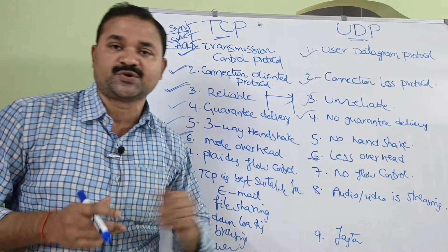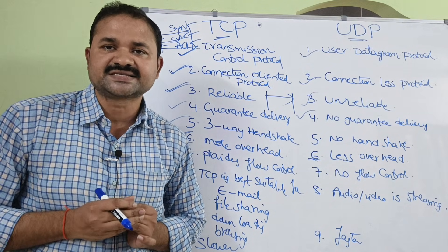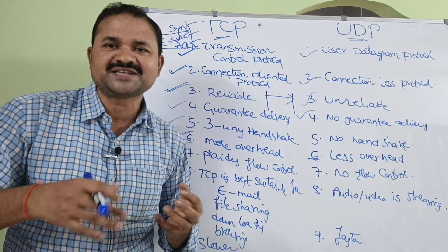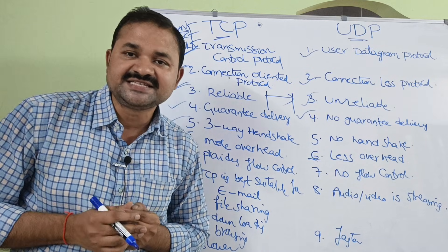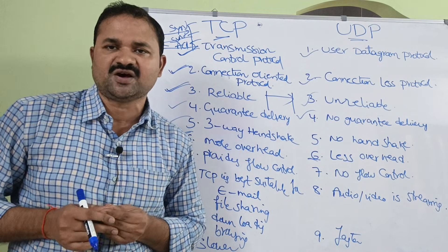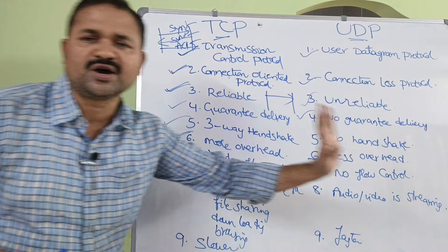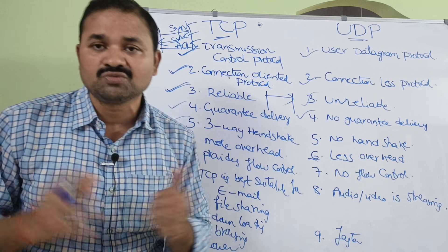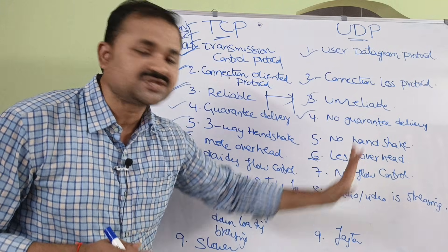TCP provides flow control. If the sender is sending data at a faster rate while the receiver is consuming it at a slower rate, some segments may be lost. To handle this, TCP has flow control mechanisms. Whereas in UDP there is no flow control mechanism, so the sender can send data at a very fast rate, but if the receiver's capacity is slow, some segments may be lost.